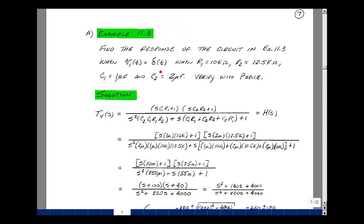Let's do an example. Suppose you find the response of the circuit in Example 11.3 on page 4, when the input is a unit impulse response. Let's use R1 equal to 10k, R2 equal to 12.5k, C1 equal to 1 microfarad, and C2 equal to 2 microfarads. We'll verify the results with PSPICE. For our transfer function for the circuit in Example 11.3, we found this expression on page 5, and that would be our h(s).